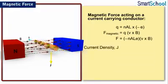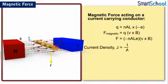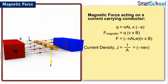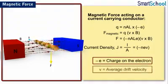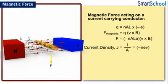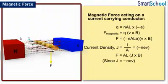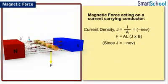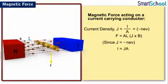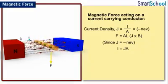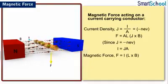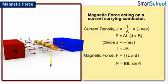Current density J is defined as the current per unit area, equal to current I divided by area A, which equals −NEV, where −e is the charge on the electron and V is the average drift velocity. The magnetic force can then be written as F = AL(J × B), since J = −NEV. From the definition of current density, current I = J × A, so the magnetic force F = I(L × B), which can be written as F = BIL sinθ.